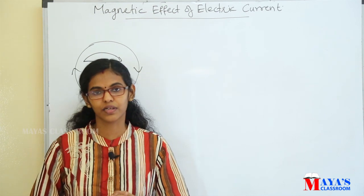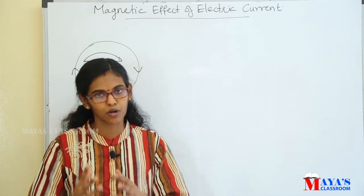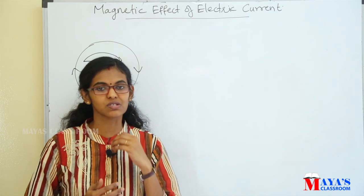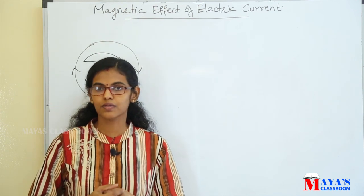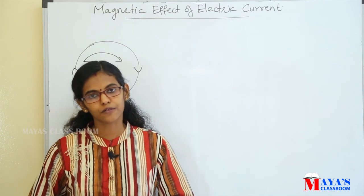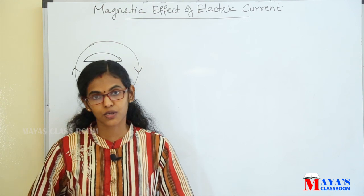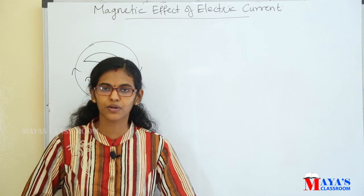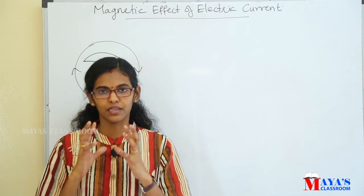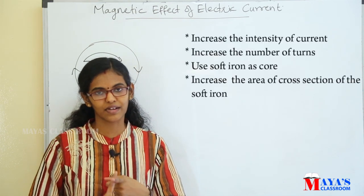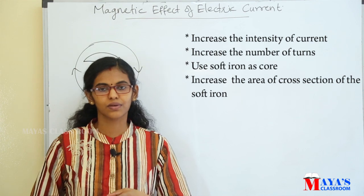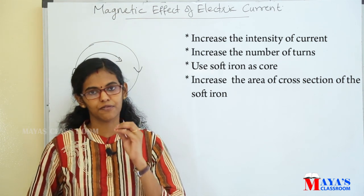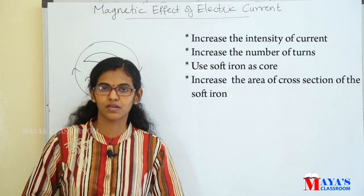The number of turns is the strength of the magnetic field. One thing we learned is to introduce the soft iron core. To increase the strength of the magnetic field: increase the intensity of electric current, increase the number of turns of the coil, use a soft iron core, and increase the area of cross-section of the soft iron core. These are the factors that affect the strength of the current-carrying solenoid.